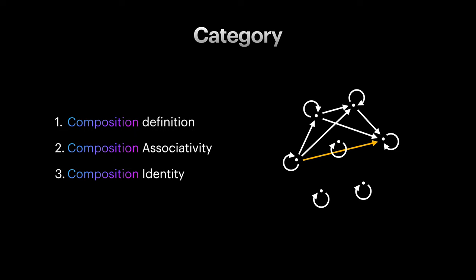If any graph with points and arrows follow these three rules, then we have a category. But what makes category so special? Why do we keep returning to it? Well, we already know functional programming is based on category theory. So understanding concepts at category level obviously gives us the bigger picture.